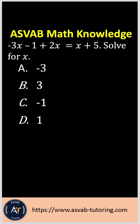Let's practice this math knowledge question for the ASVAB, PHI, CAT, CATIB, AFQT, AFCT, and ASVAB GT. The question asked here is: negative 3x minus 1 plus 2x equals x plus 5 — solve for x. It is a similar problem to the previous one but a little bit more difficult, so make sure that you practice multiple times.